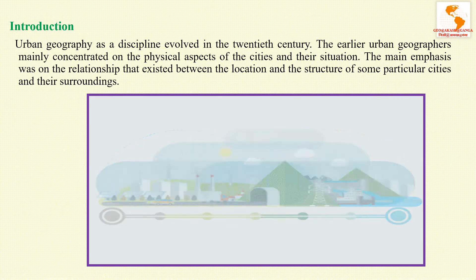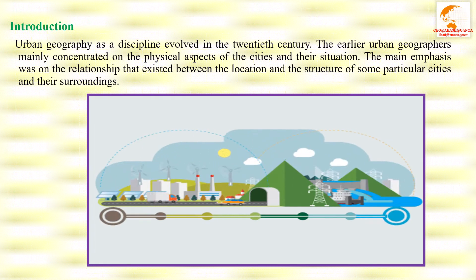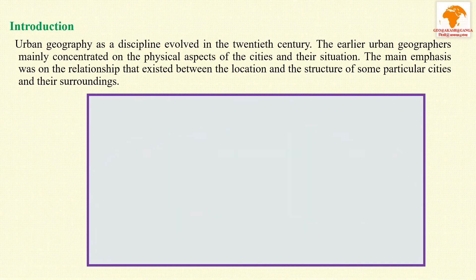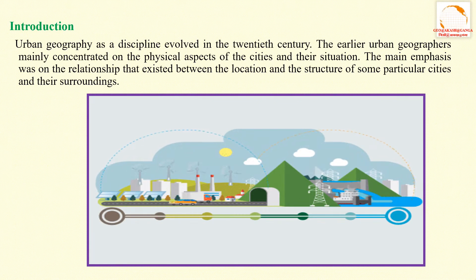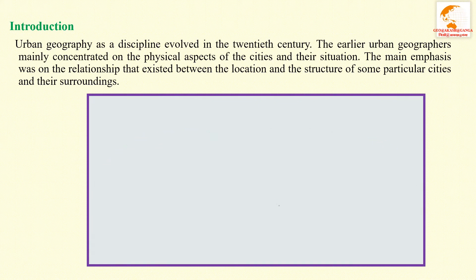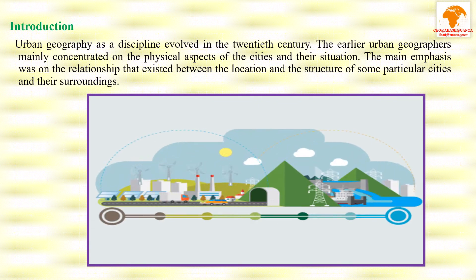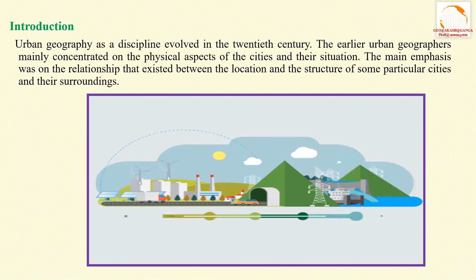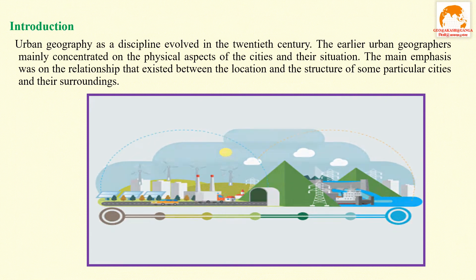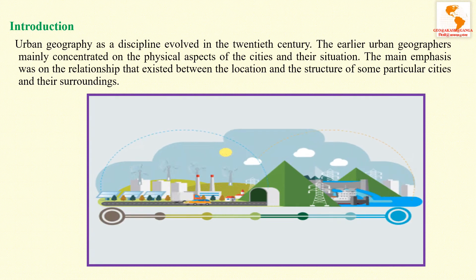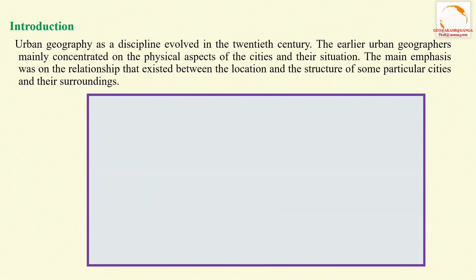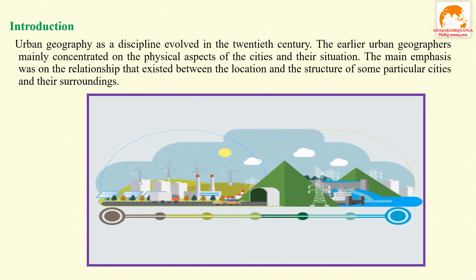As a discipline, urban geography evolved in the 20th century. Over time it has developed into a well-established discipline which deals with the study of urban settlements within the framework of their geographical setting. The sub-discipline studies urban settlements, their morphology, development, and functions.